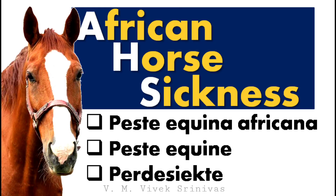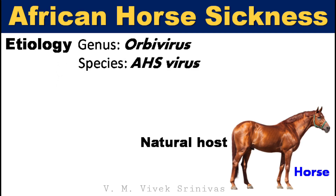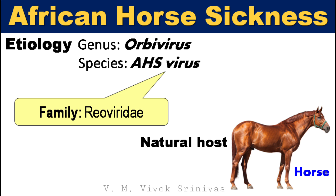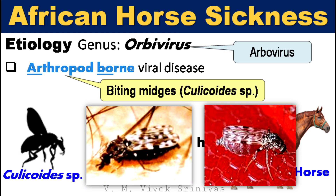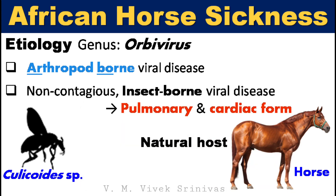The other names for this infection are Pesta equina africana, Pesta equine, and Perdesiekte. The causative agent of the disease is African Horse Sickness Virus, which belongs to the genus Orbivirus of the family Reoviridae. This virus is an arbovirus, transmitted by biting midges like Culicoides species. So the infection is a non-contagious, arthropod-borne viral disease characterized by pulmonary and cardiac lesions affecting horses.